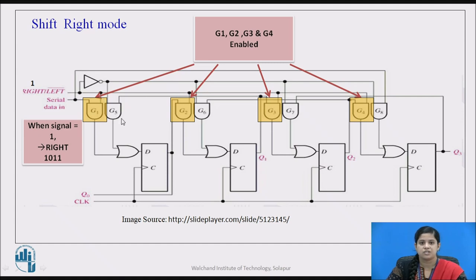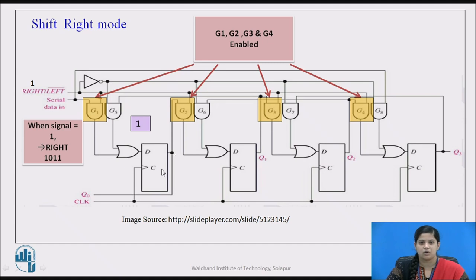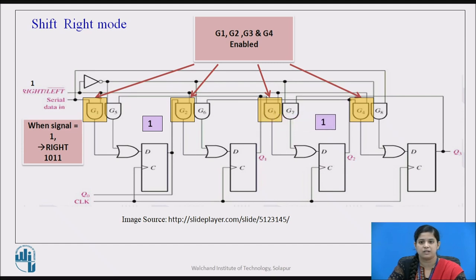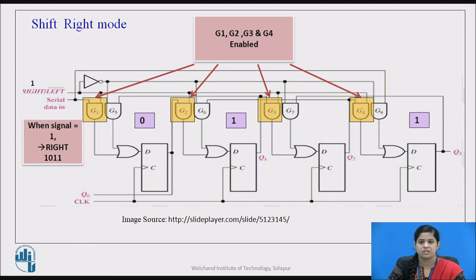Gates G5, G6, G7, and G8 give outputs of 0. At the first clock cycle, we select the rightmost bit of the bit stream 1011, which is 1. So the input to G1 will be 1 and the output of flip-flop D0 will be 1, meaning Q0 equals 1 at clock pulse 1. At the second clock pulse the data shifts right by 1. At the third clock pulse, D0's data moves to D1 and new data appears at Q0, giving 011. At the fourth clock pulse, all bits are shifted right one by one and finally we get 1011.